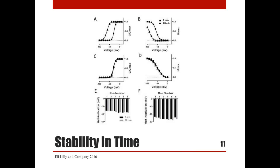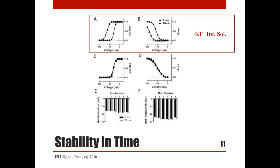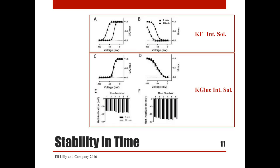To accurately evaluate compound effects on a defined conformational state of the channel, we needed to assure that biophysical properties remain stable throughout the experimental protocol. We monitor channel activation and inactivation at the beginning and end of 30-minute recordings. In initial experiments, we used a cesium fluoride-based internal solution and observed large shifts in channel activation and inactivation during the experiment. We switched to a potassium gluconate-based internal solution and added a series of wash steps, which dramatically improved stability during individual runs and across six runs of a typical experimental day.